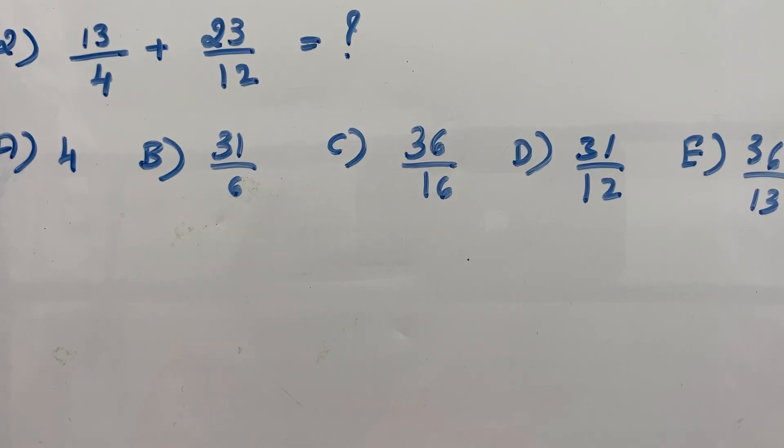Find 13 over 4 plus 23 over 12. Fraction addition. 13 over 4 plus 23 over 12.